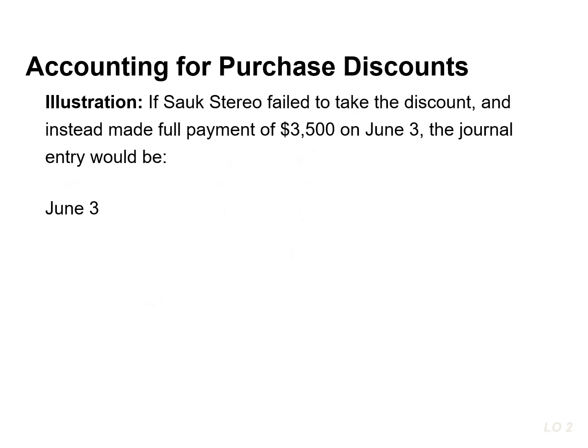If Socks Stereo failed to take the discount and instead made a full payment of $3,500 on June 3rd, they would reduce or debit accounts payable and reduce or credit cash for $3,500.